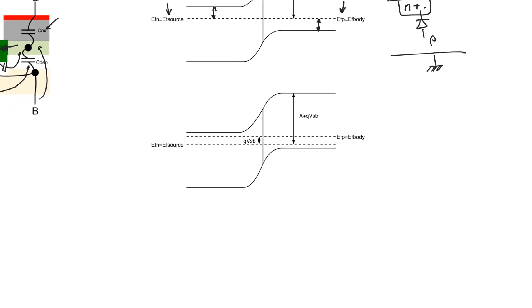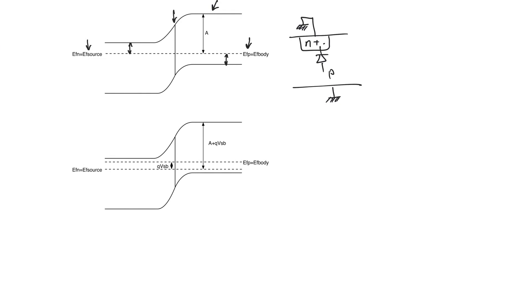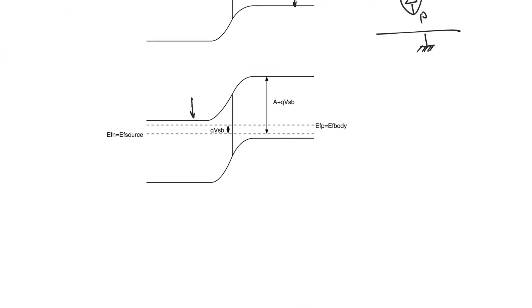When we raise the source potential, we actually put this P-N junction into reverse bias — it is no longer at thermal equilibrium. The energy levels on the source side, on the N side, are pushed down and we create a state of thermal non-equilibrium around the interface. Around the interface we see a state of non-thermal equilibrium where there is no single Fermi level. Instead, we have two quasi-Fermi levels: one is the Fermi level for holes, which is the Fermi level of the body, and one is the Fermi level for electrons, which is the Fermi level of the source.